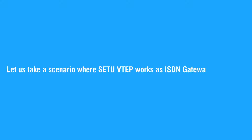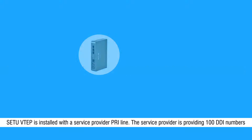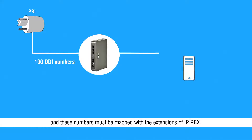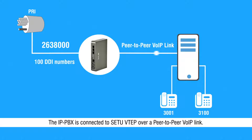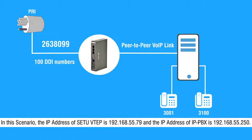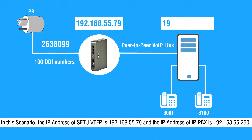Let us take a scenario where Setu VTAP works as ISDN gateway for IP PBX. Setu VTAP is installed with a service provider PRI line. The service provider is providing 100 DDI numbers, and these numbers must be mapped with the extensions of IP PBX. The IP PBX is connected to Setu VTAP over a peer-to-peer VoIP link. The IP address of Setu VTAP is 192.168.55.79 and the IP address of IP PBX is 192.168.55.250.